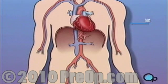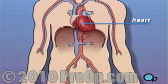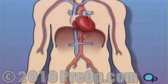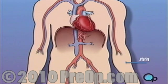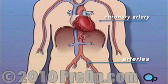The heart is located in the center of the chest. Its job is to keep blood continually circulating throughout the body. The blood vessels that supply the body with oxygen-rich blood are called arteries. The arteries that supply blood to the heart muscle itself are called coronary arteries.